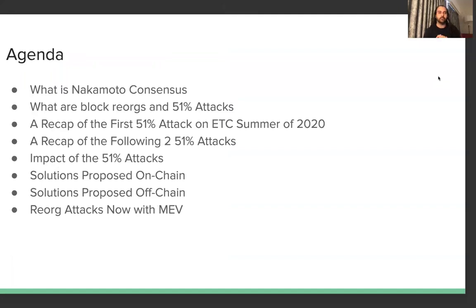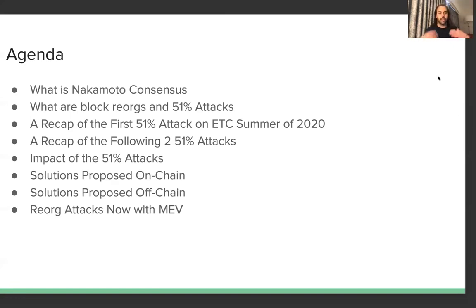For today's agenda, this is all about 51% attacks and how to handle them in blockchain. We're going to cover Nakamoto consensus, blockchain rewards and 51% attacks, a recap of the first 51% attack on ETC in summer 2020, the following two attacks, their impact, proposed on-chain and off-chain solutions, and finally we'll briefly cover reorg attacks with MEV — miner extractable value.